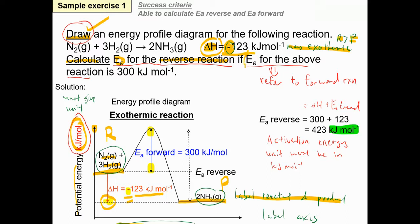Next, label the activation energy. We usually only label the forward activation energy unless the question requires both. The forward activation energy is measured from the reactants up to the peak. In this case, it is 300 kilojoules per mole.